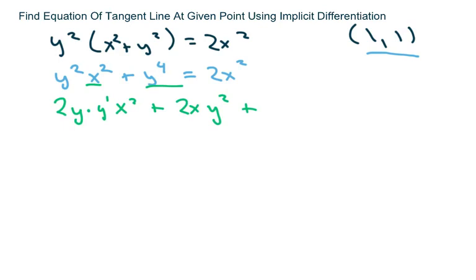And then for this one, that's just going to be 4y cubed times the derivative of y. And the last is going to be 4x.